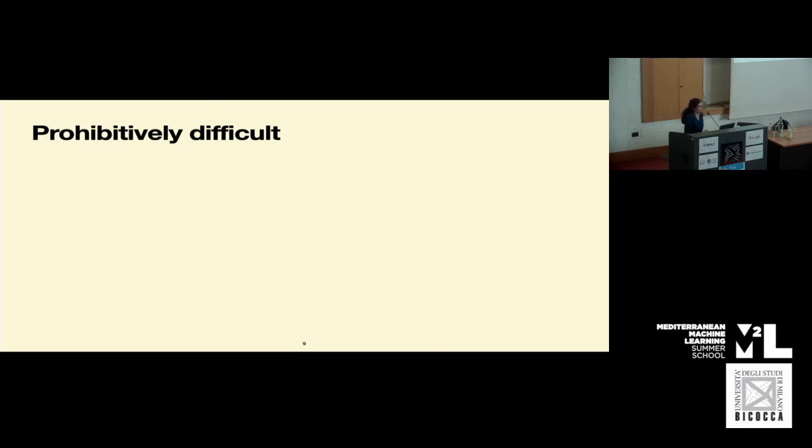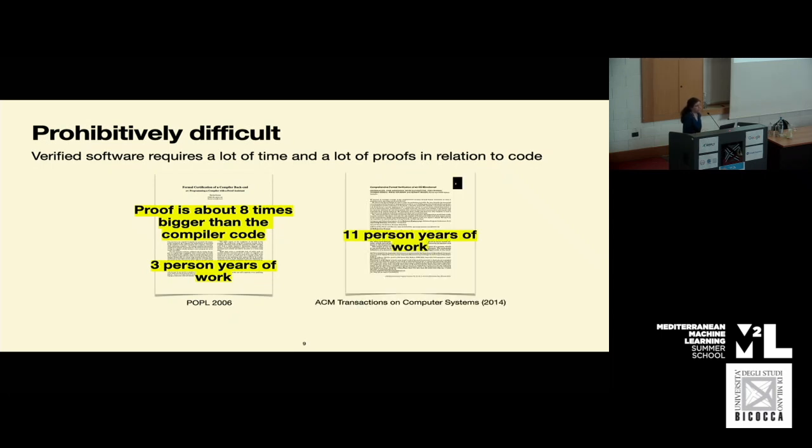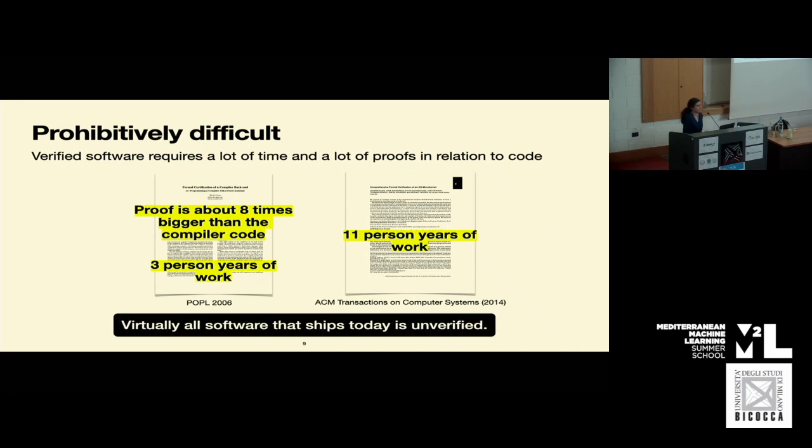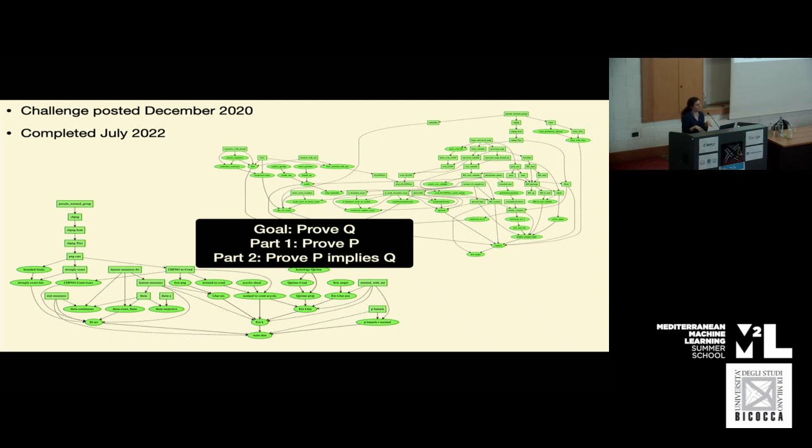And somewhat predictably, even with the help of an interactive theorem prover, the effort required to write proofs is often prohibitive. For software verification, verifying code requires a lot of time and a lot of proofs in relation to your code. For example, for the Coq-verified C compiler CompCert, the proof is more than eight times bigger than the compiler code itself and took three-person years of work. Similarly, to verify an OS microkernel in Isabelle, it took 11-person years to write the proof script. And the triumph of that liquid tensor experiment took place over the course of two years.